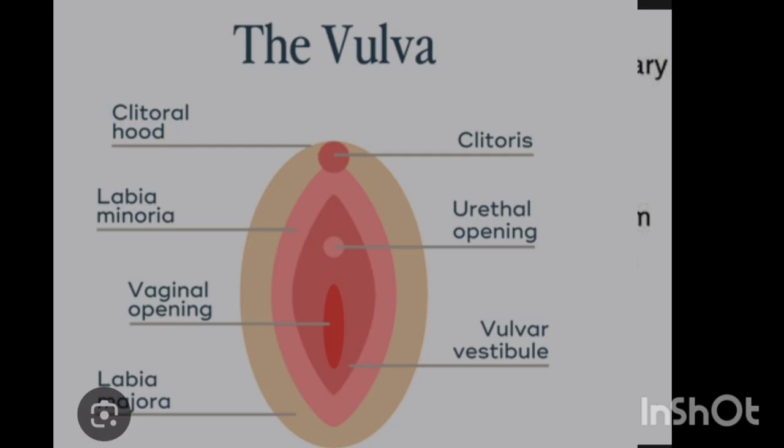After the labia minora, we have the clitoris. The clitoris is a finger-like projection found inside the vagina and it consists of erectile tissue, just like a penis. In embryology, it is analogous to the penis in males — it erects during sexual arousal. After the clitoris, we have the vestibules, vestibular glands, the vaginal orifice, and hymen.